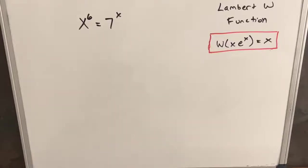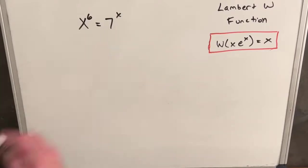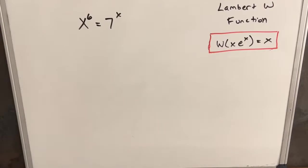Hey, today we're continuing with another video on the Lambert W function. This is part of a series — I'll provide a link in the description to that playlist and also to the introduction video if you want to review how the Lambert W function works. So let's get started on this problem: x to the 6th equals 7 to the x.